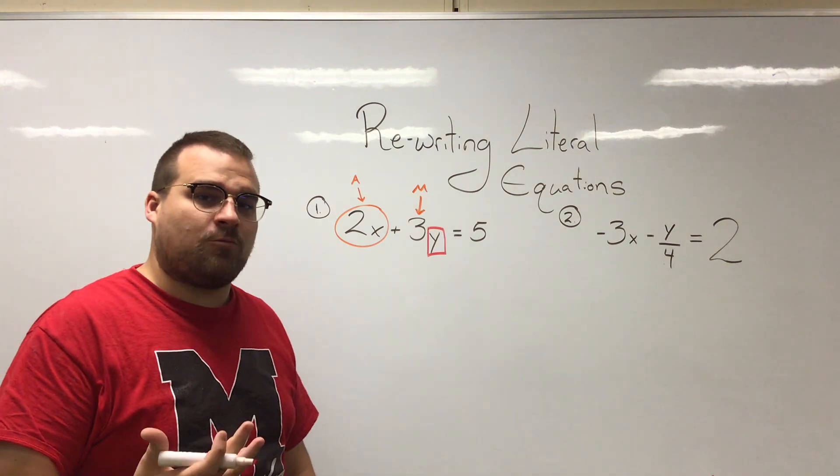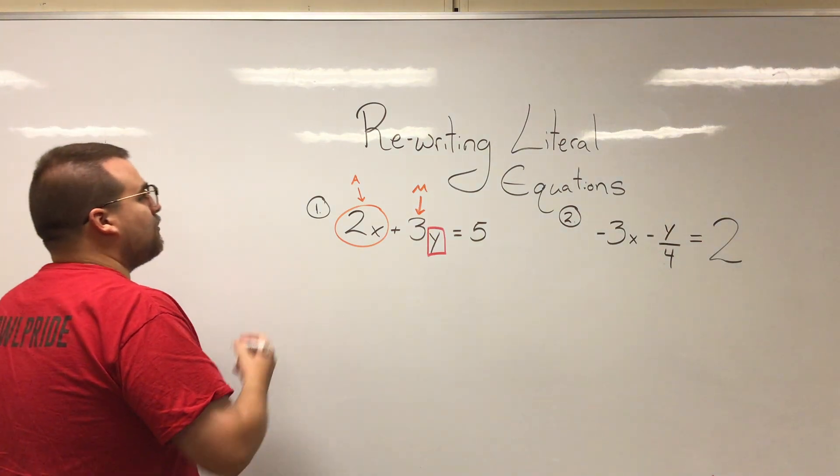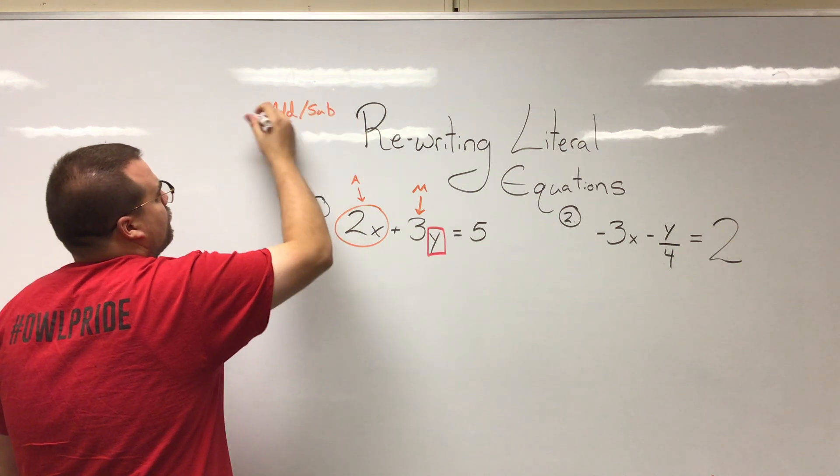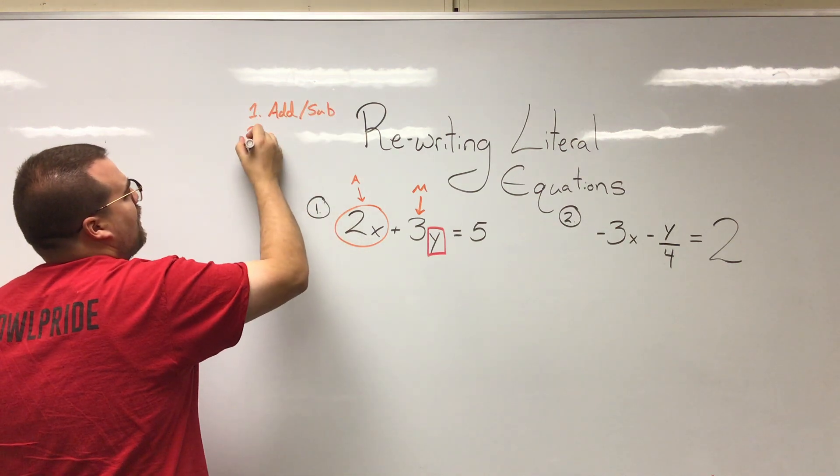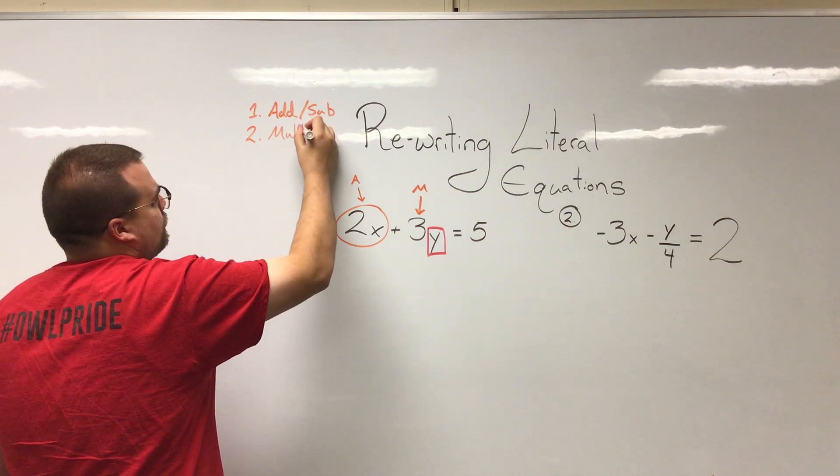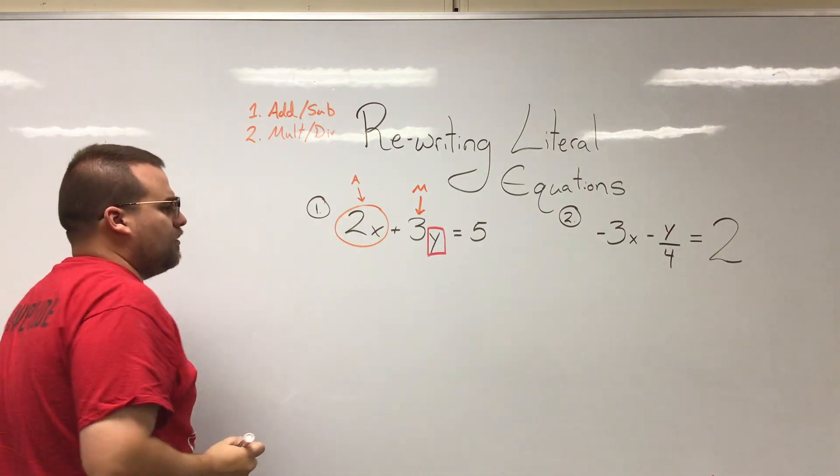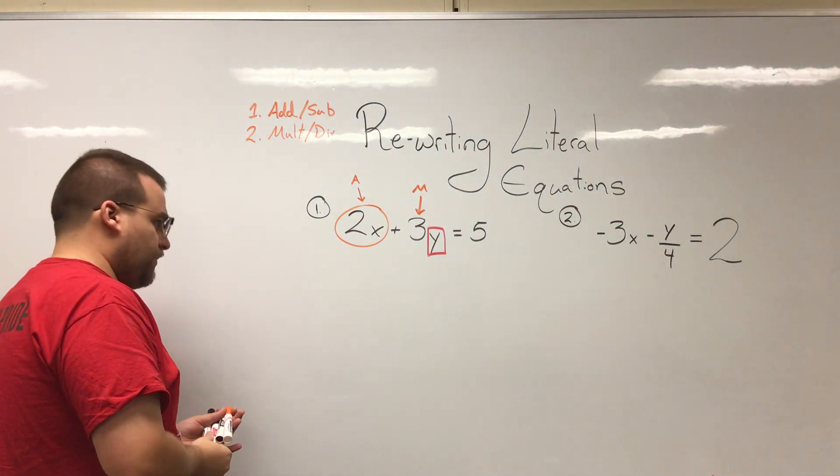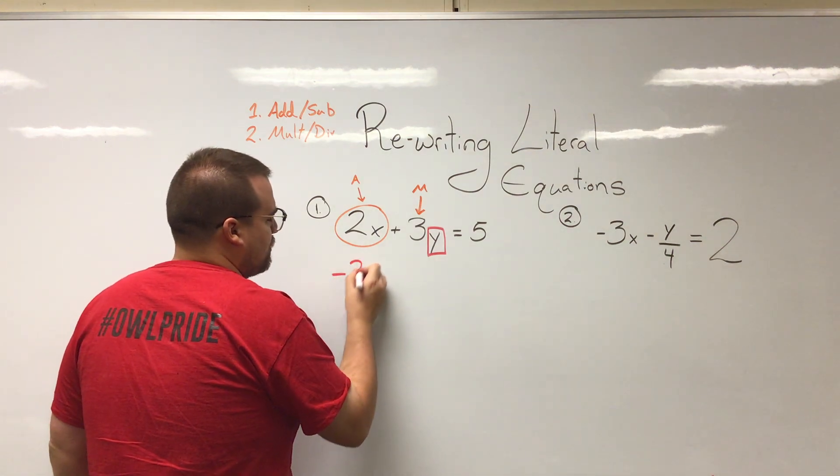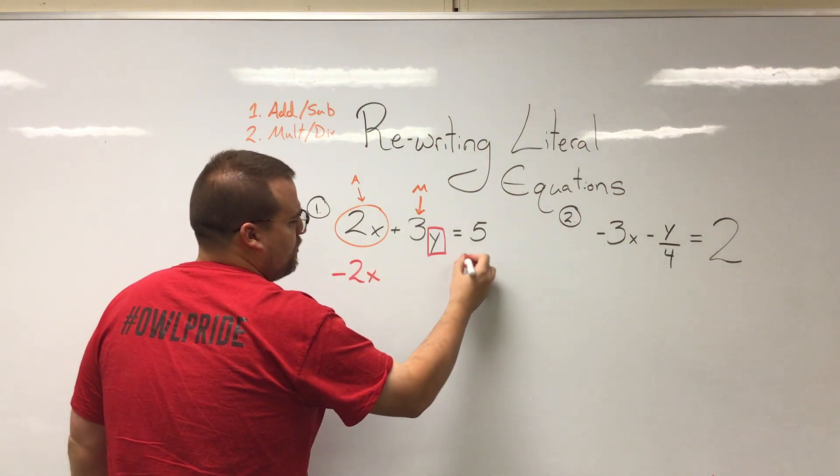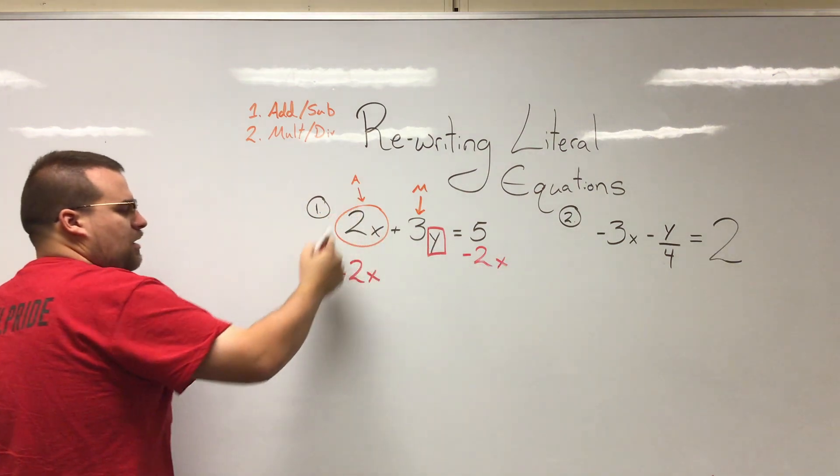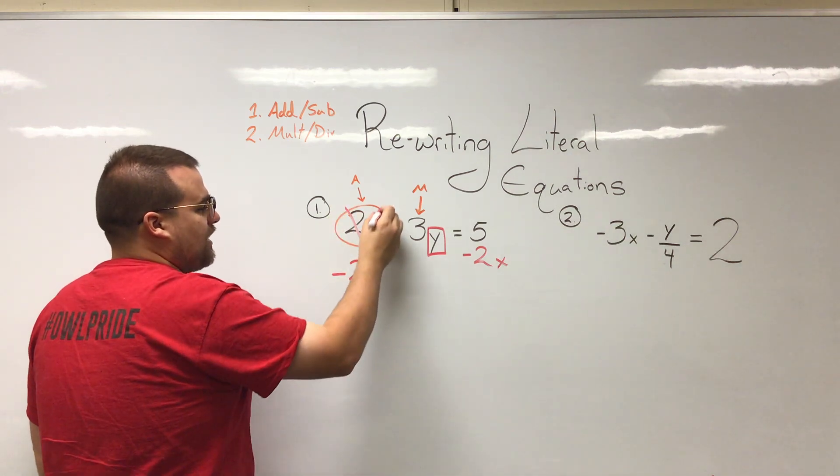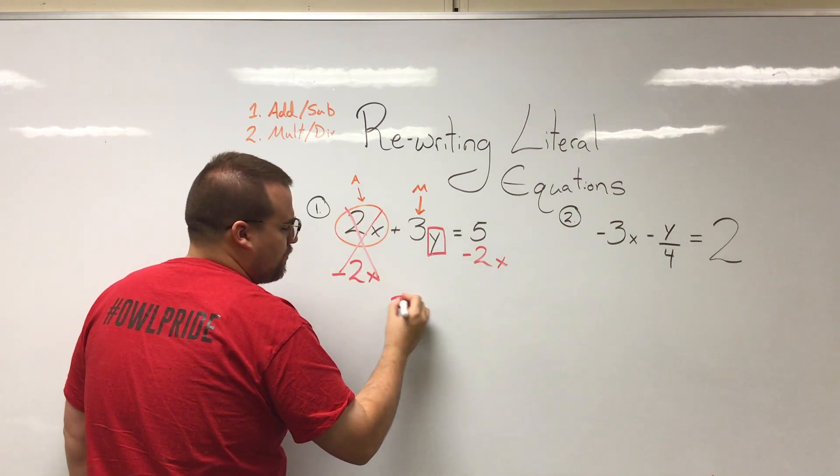Meaning I'm going to get rid of addition and subtraction first and then I will get rid of multiplication and division. So I'm going to first get rid of this 2x. So what I'll do is I'm going to say minus 2x on both sides. I am subtracting because it's currently adding and subtraction is its inverse operation. These would cancel out leaving me with 3y at this point.